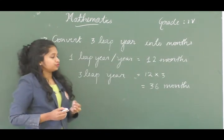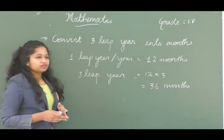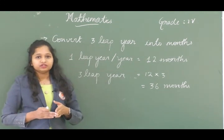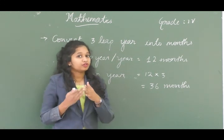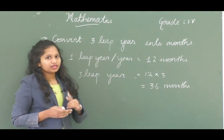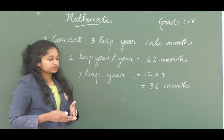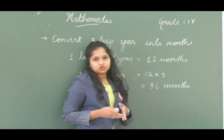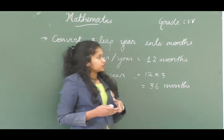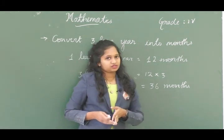Another question: convert 3 leap years into months. In both a normal year and a leap year, there are 12 months — the number of months doesn't change. So one leap year has 12 months. Three leap years equals 3 × 12 = 36 months.